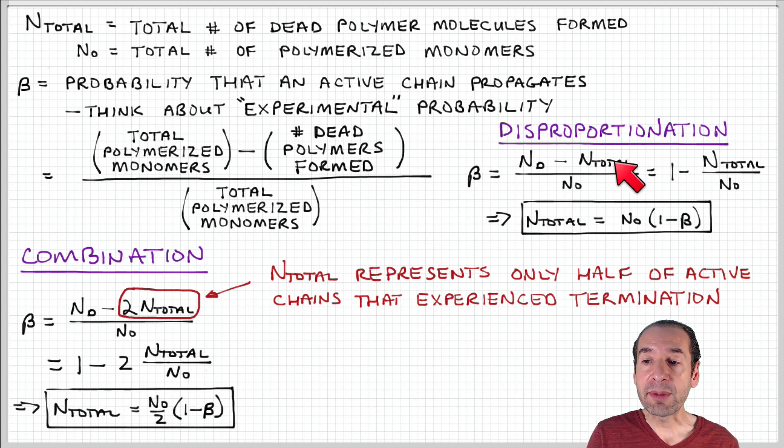In disproportionation termination, the number of dead polymers corresponds to the number of termination events, because each dead polymer represents one active chain experiencing a termination event. Here, the number of termination events is actually twice the number of dead polymers, because each dead polymer was formed by the combination of two active chains.